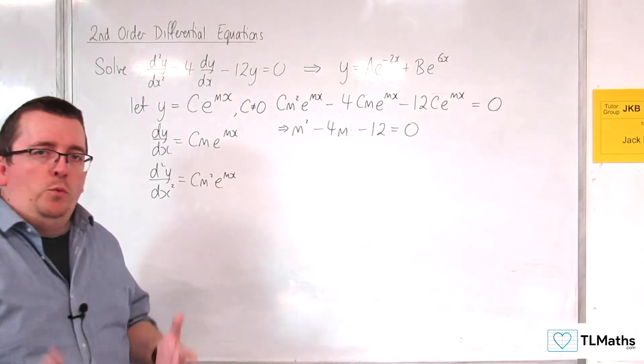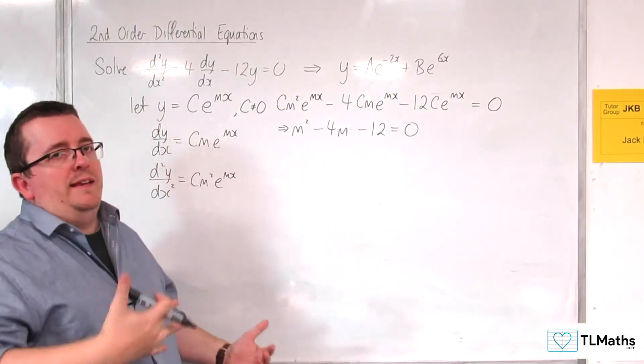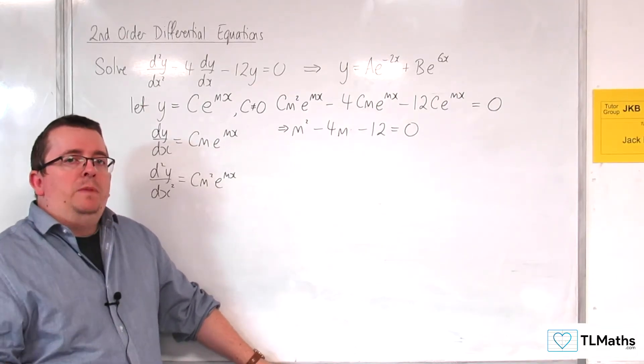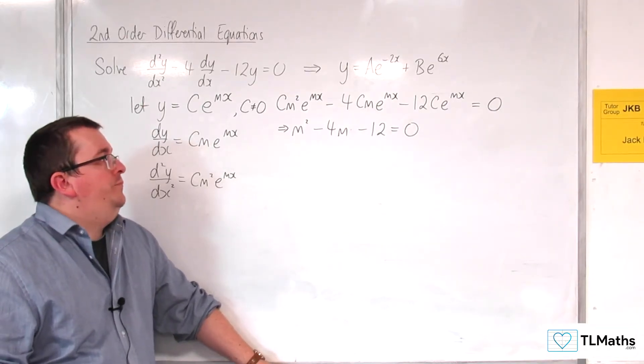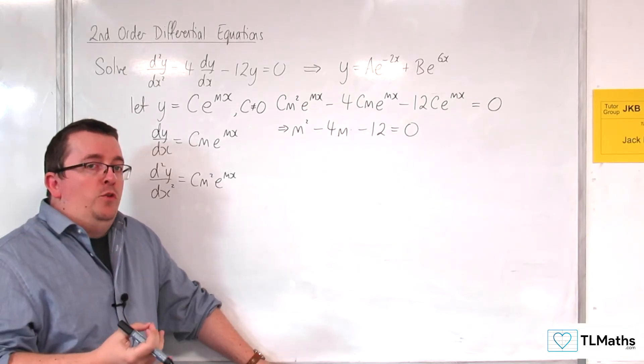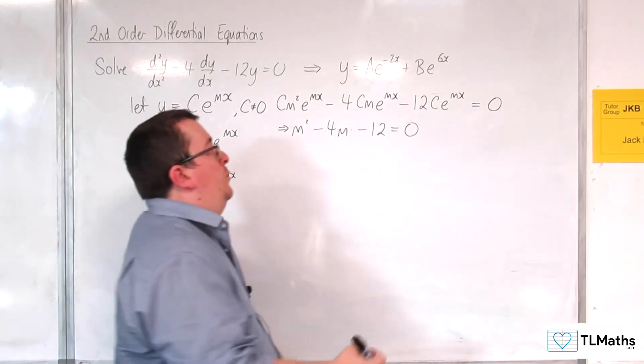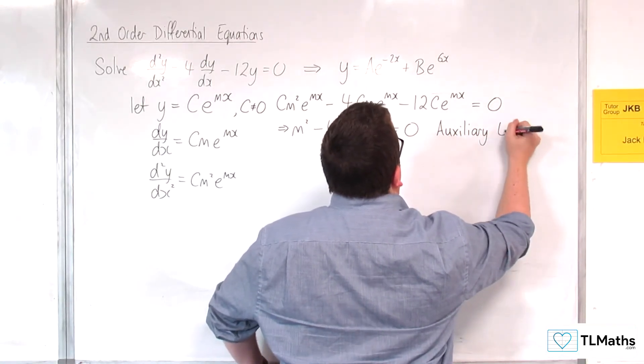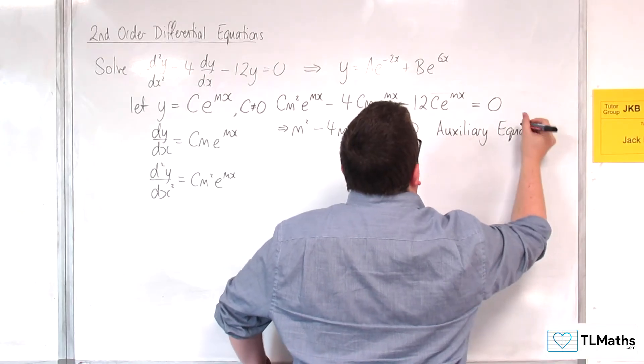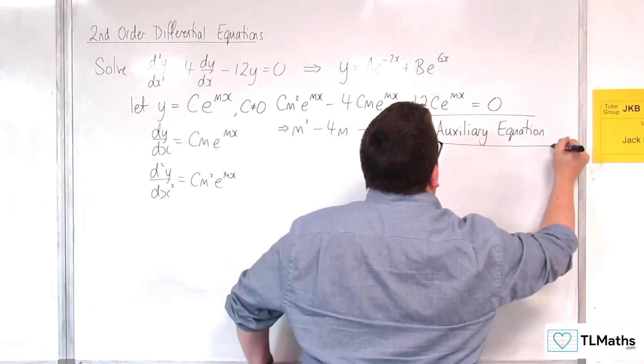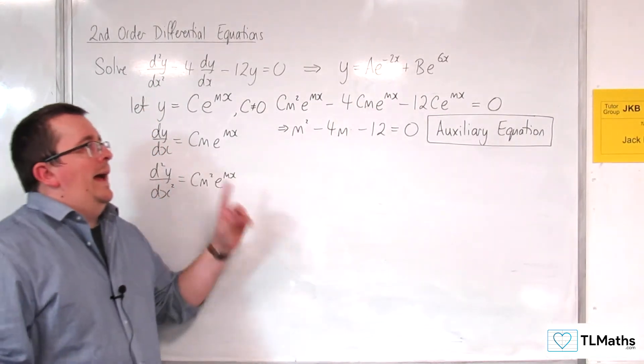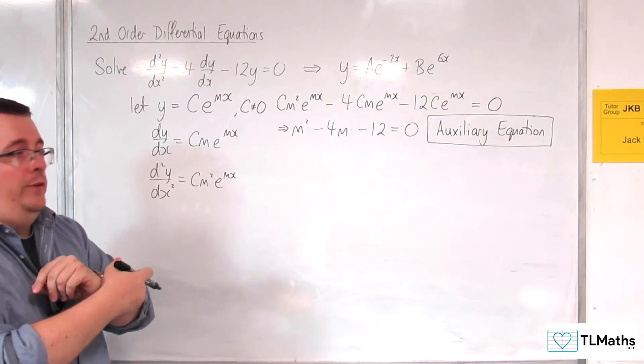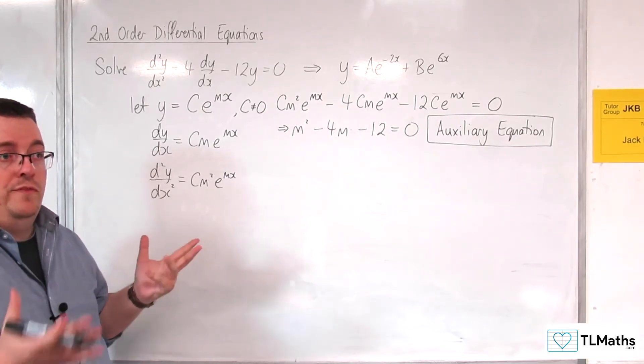So I would be left with a quadratic equation, and that's where those ideas we looked at in the previous video are really coming from. There is this link with quadratics. Now this quadratic equation that we are left with, we refer to as the auxiliary equation. Solving this allows us to find the values of m.